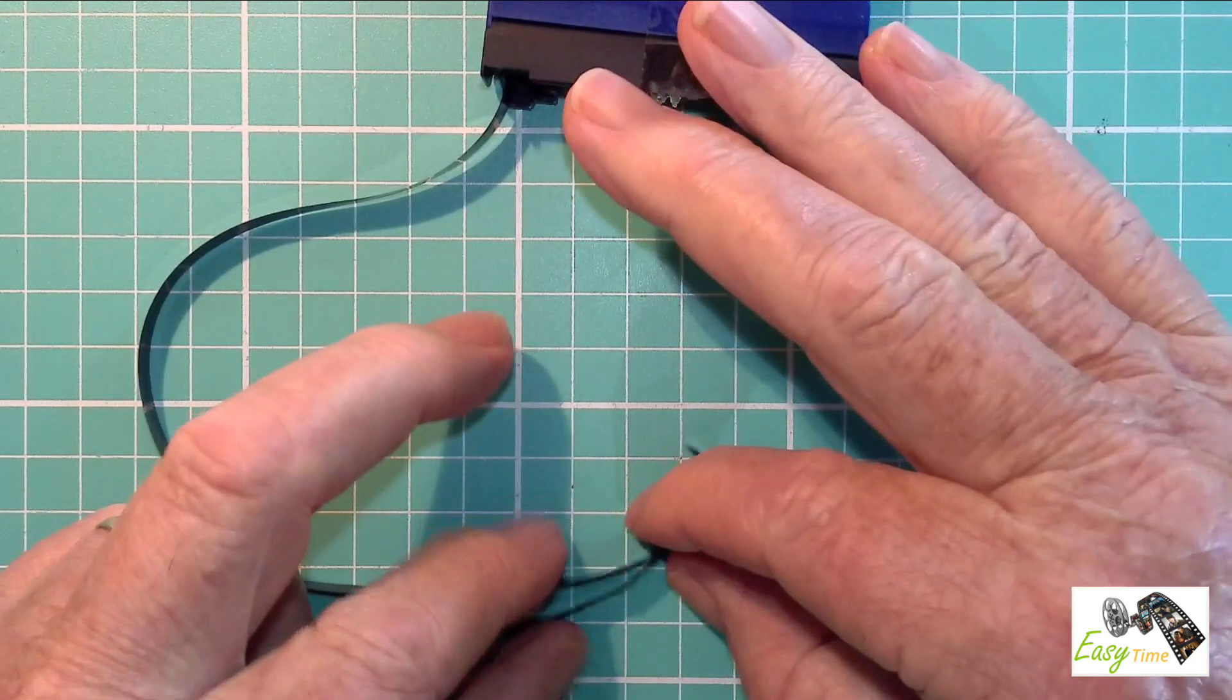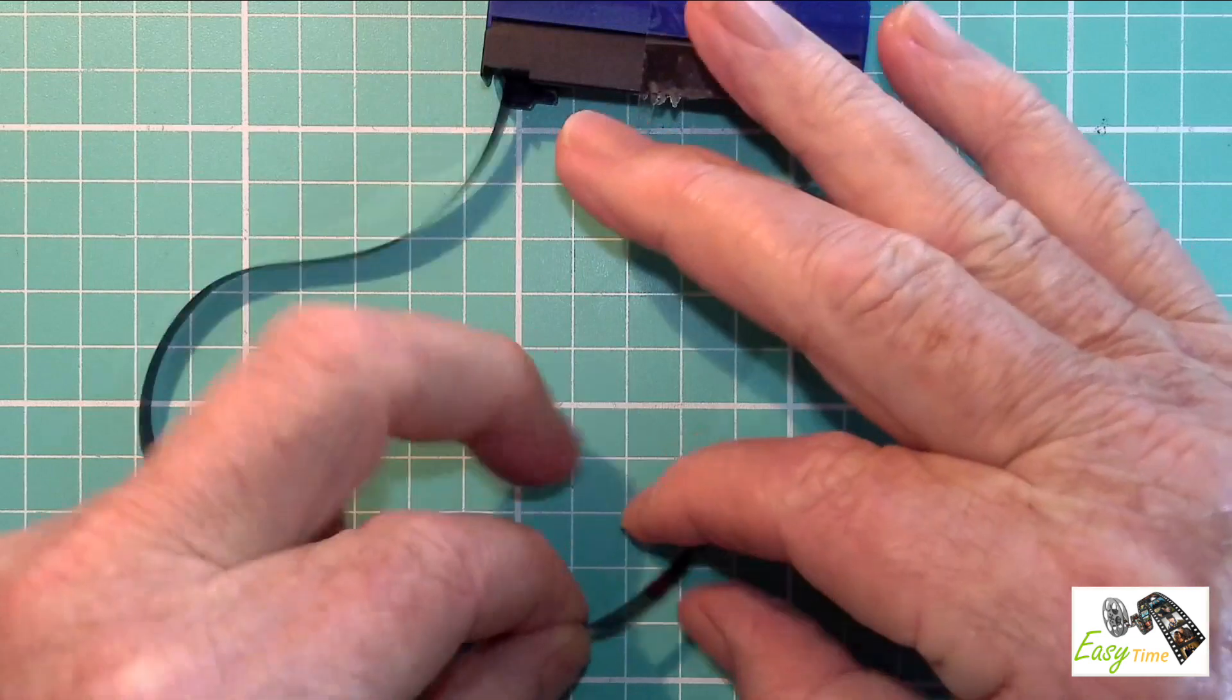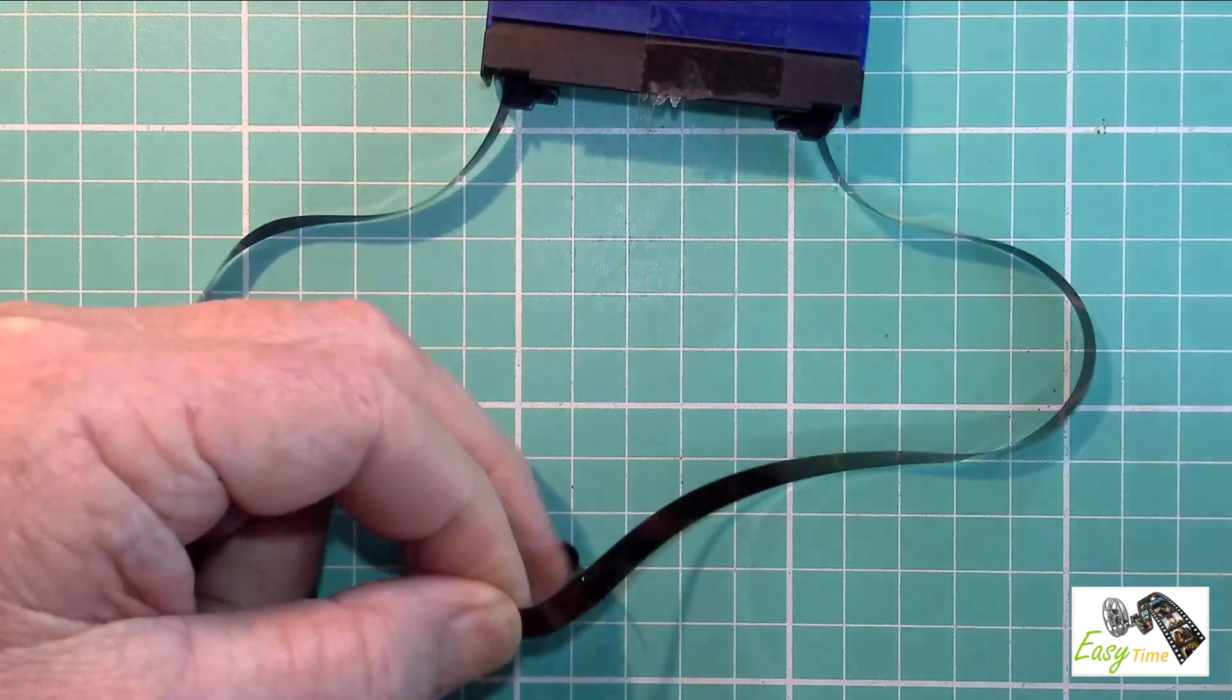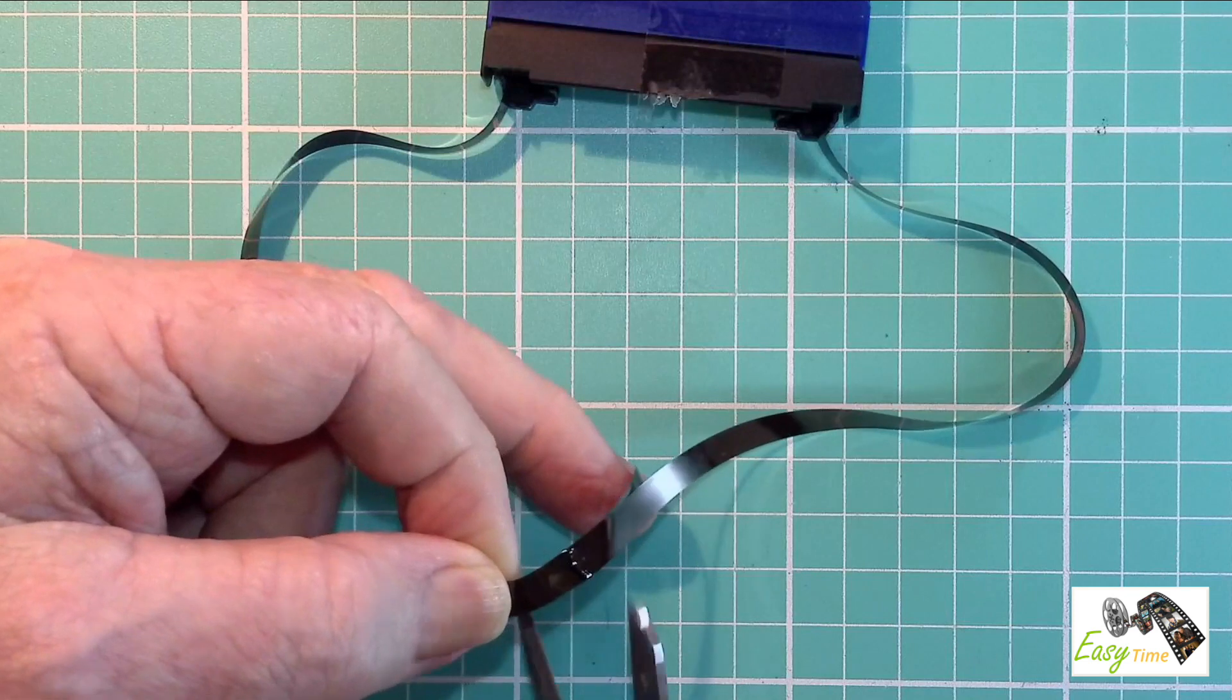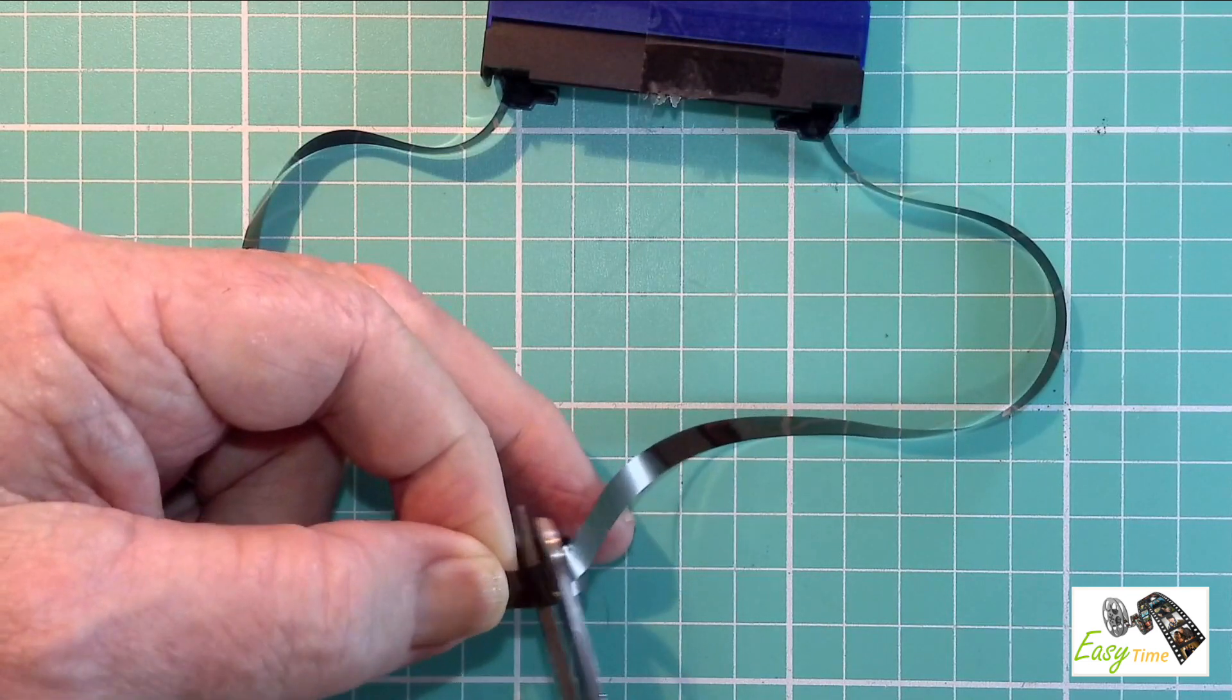Once I get enough tape out, I then try and align the two pieces of tape up so that I can cut them correctly so that both sides match.